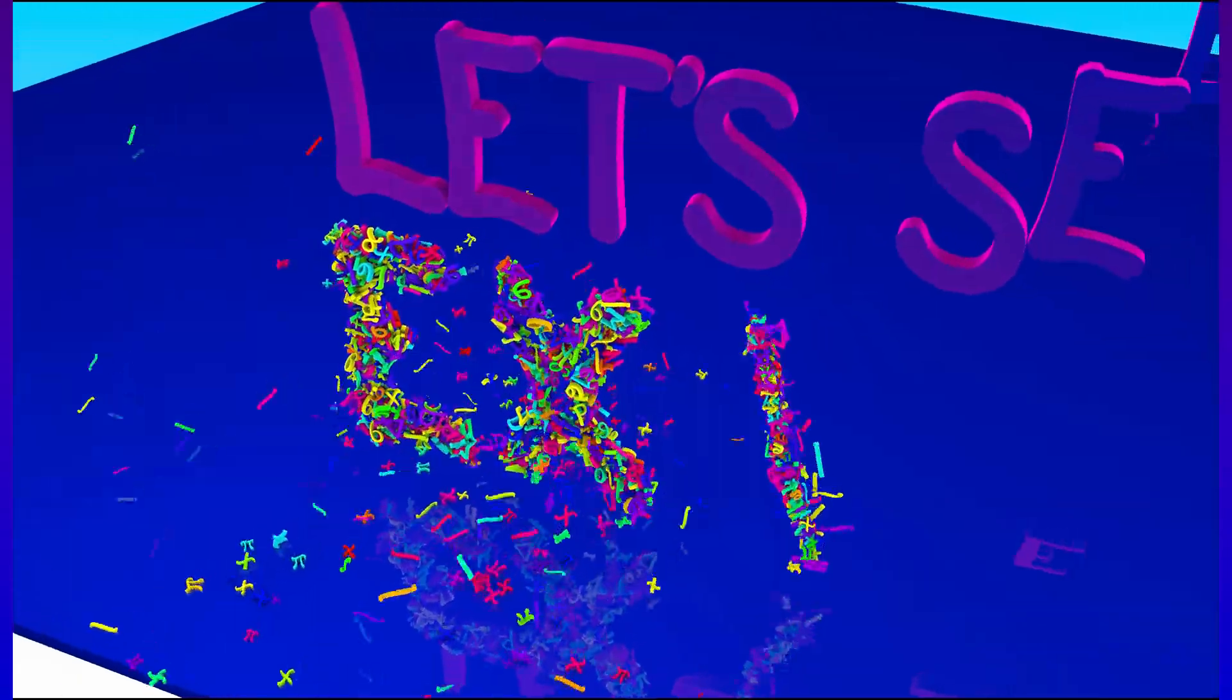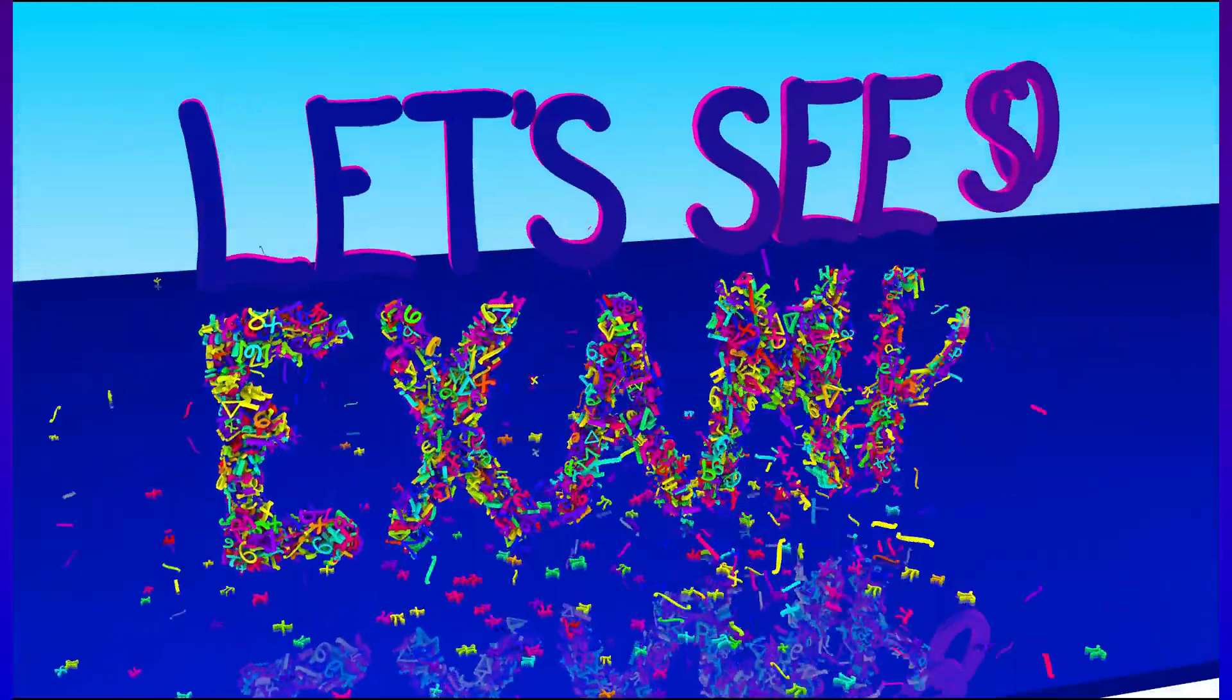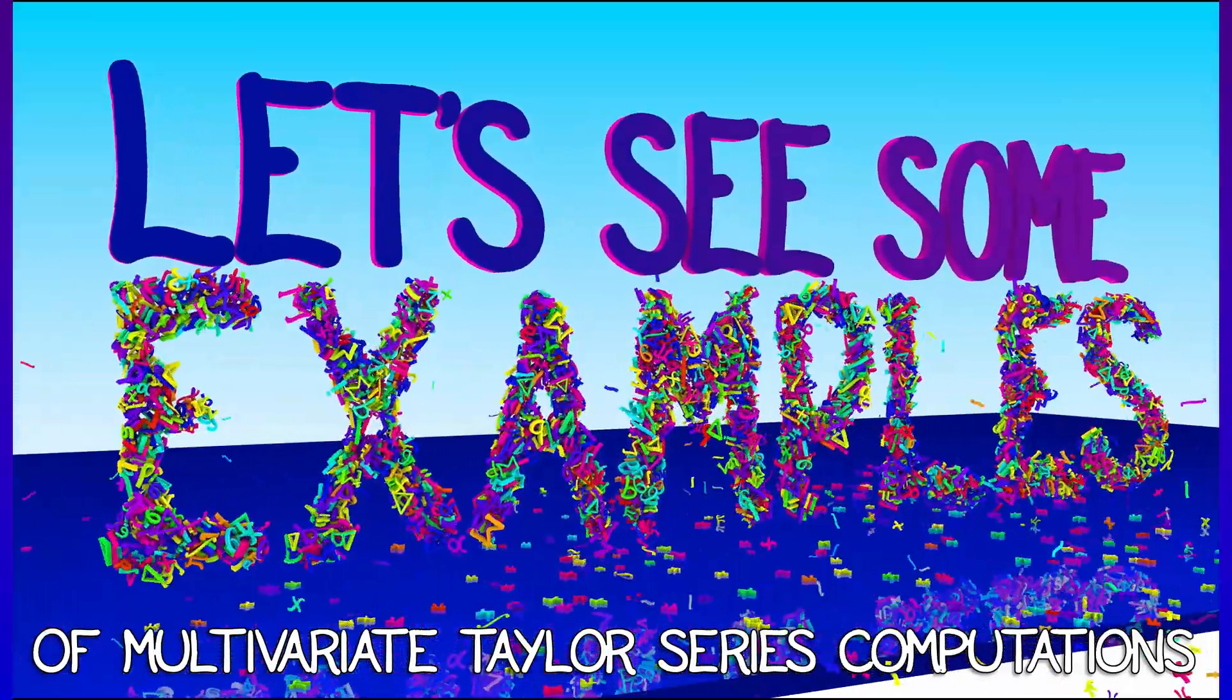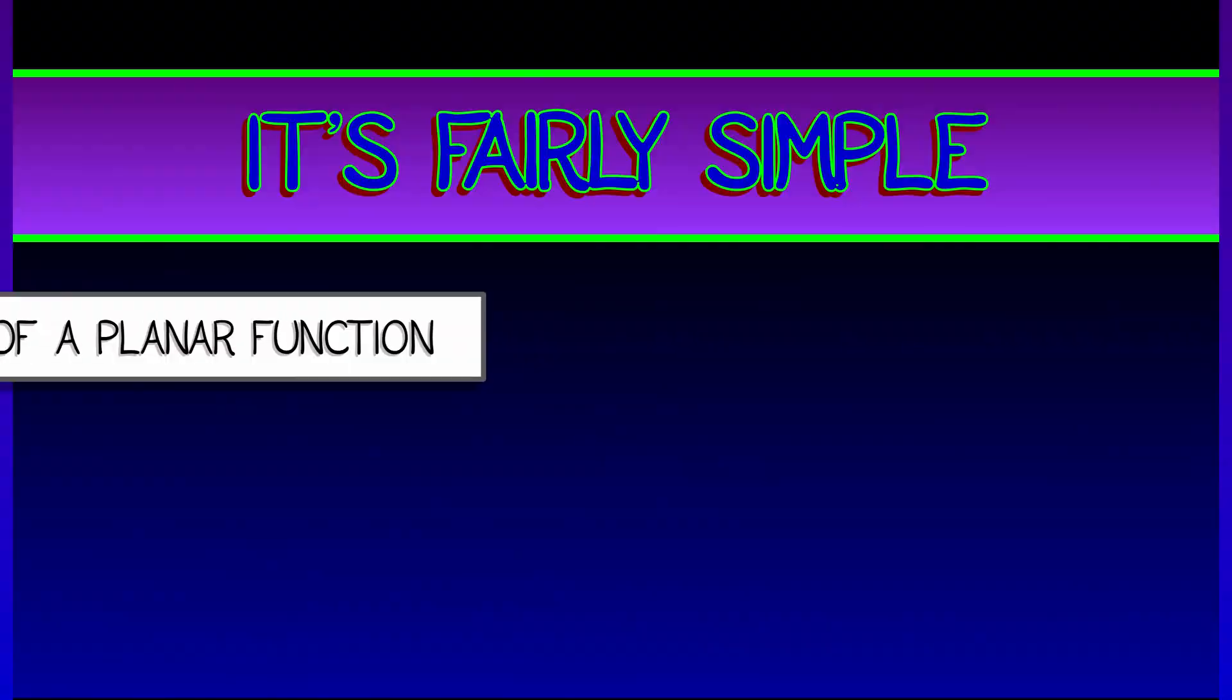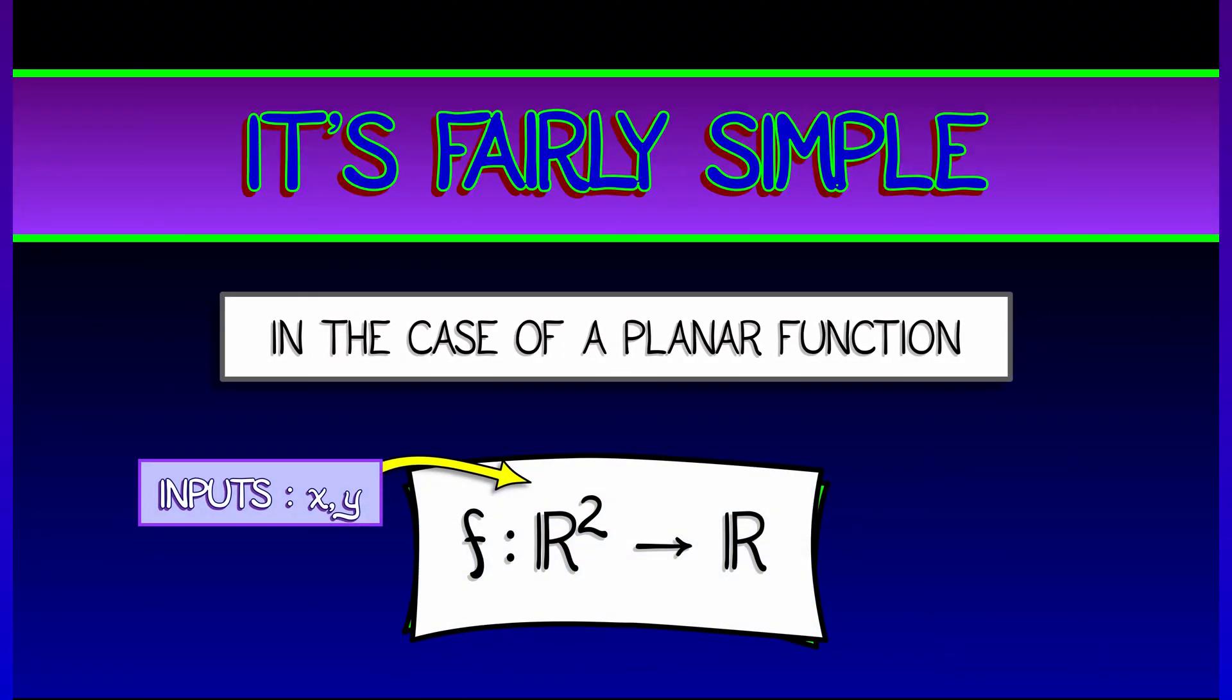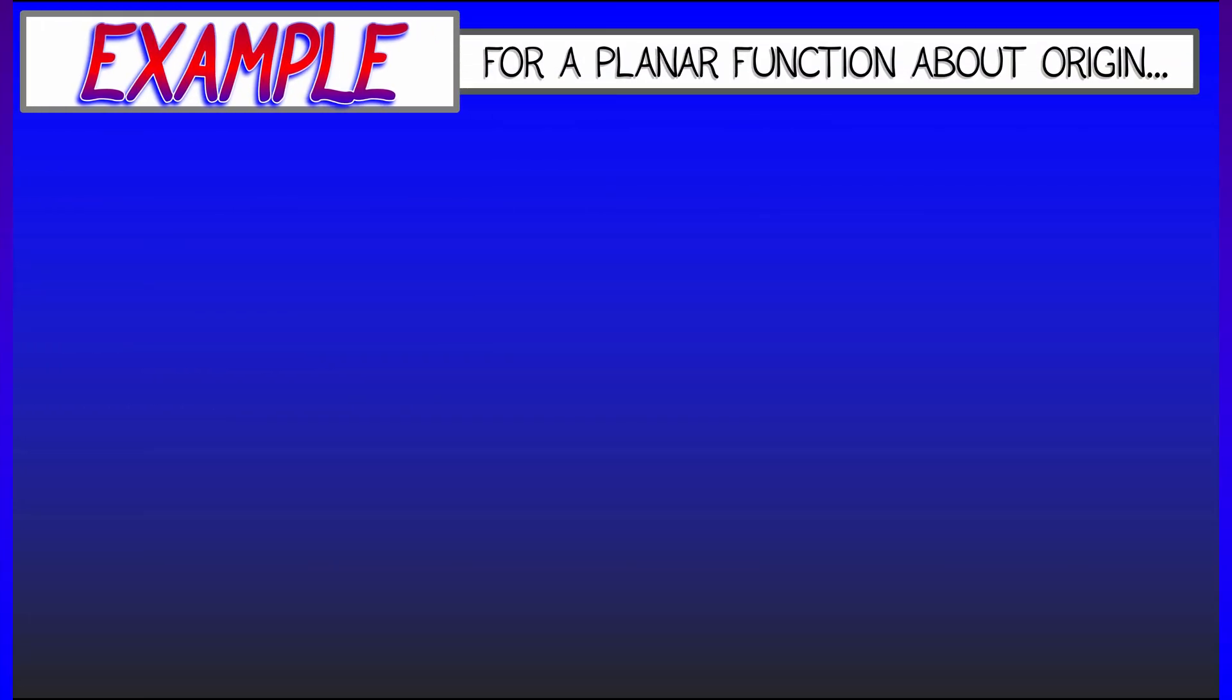Although the general formula for a Taylor series about a point looks pretty imposing, we're going to see that if we focus on a couple of simple examples, you're going to get the hang of it right away. Especially if we start off in the simple case of a function with two inputs and one output. Let's say the function is f and the inputs are x and y. What's the general Taylor series of that about the origin? This is not going to be so bad.